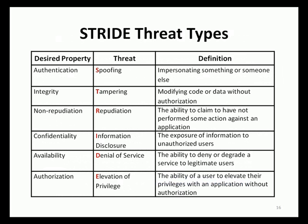The STRIDE threat types document the desired application properties and the threats that could compromise them. The first threat is Spoofing, which allows a malicious user to pose as something or someone else, such as a legitimate user of an application or an external service. The desired property negatively affected by spoofing threats is authentication, which enables an application to validate the identity of a principal. The letter T in STRIDE represents Tampering threats, which allow malicious users to make unauthorized modifications to data or code, both at rest and in transit. The desired application property affected by tampering is integrity.